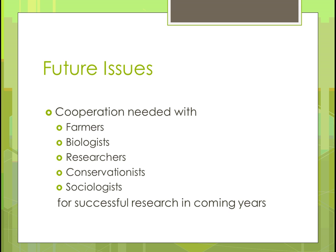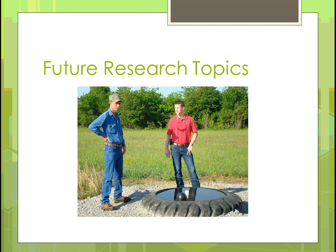We're going to have to figure out ways to cooperate better — how do we get farmers, biologists, researchers, conservationists, and sociologists to all come together so we can have successful research in the coming years? Today, that really doesn't happen that much — there are a few projects trying, but we need more. Here's an example of a conservationist out in an area. Just below the knee of the conservationist is a wire separating pasture land where animals can come get water on either side of the wire — it really wasn't meant to be something special.